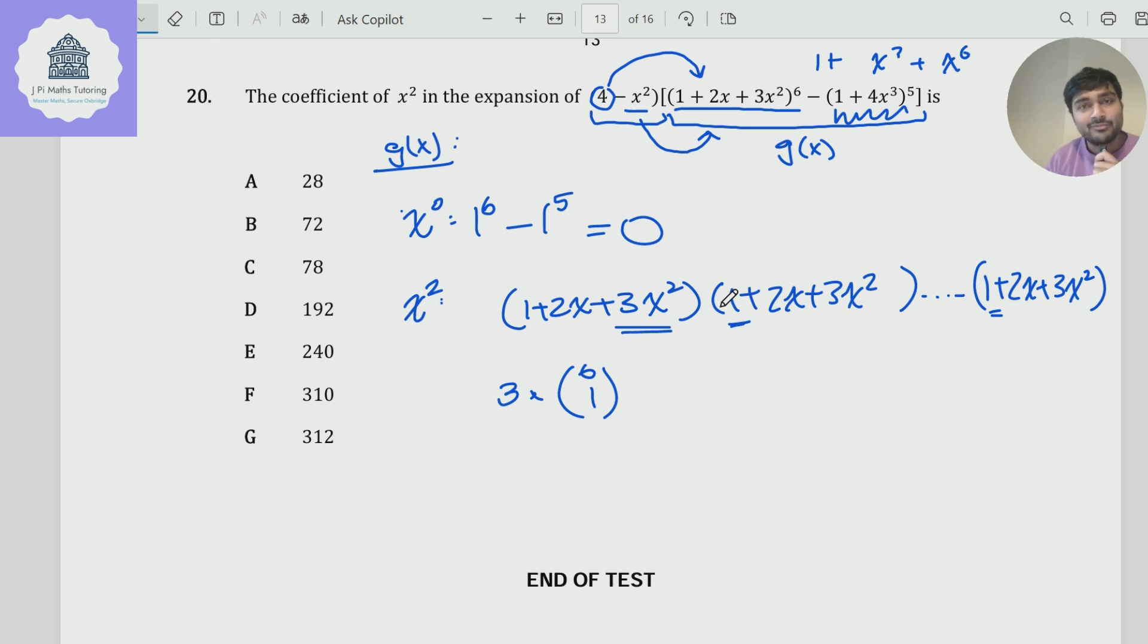Because first, out of the six brackets, I need to choose one of them in which to take the 3x² from. And then the other five remaining brackets, those I have to take the one from. So I don't get any choice over those. But I do get six choices for where I choose the 3 from. So 3 times 6 choose 1, which is 3 times 6, which is 18.